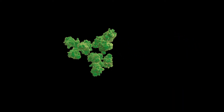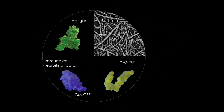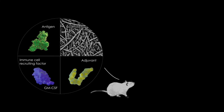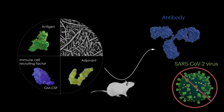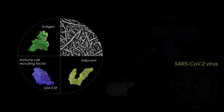Wyss Institute researchers are developing Omnivax vaccines against the SARS-CoV-2 virus by including specific viral surface proteins as the antigens in the vaccine. When injected into mice, the Omnivax vaccine induces the generation of SARS-CoV-2-specific antibodies that have the ability to neutralize the virus.